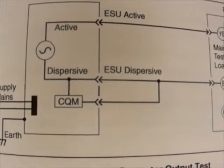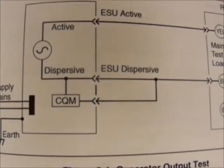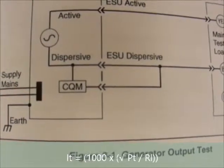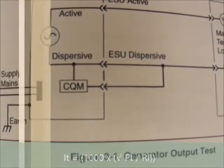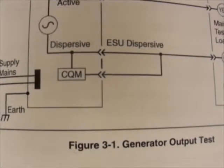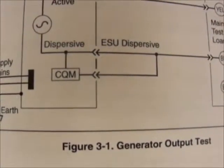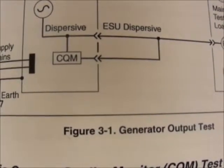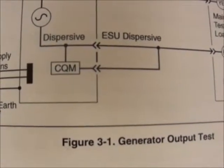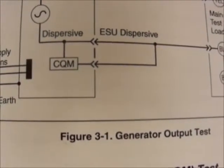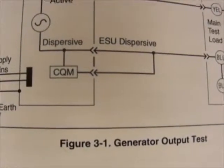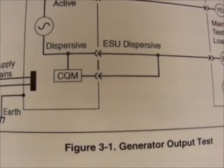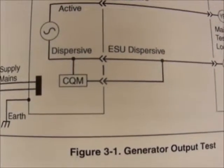We can compute target currents if our analyzer does not measure up to 1,000 ohm loads. For example, ITMA equals 1,000 times the square root of PT divided by RL. Imagine our analyzer's maximum test load is 750 ohms. To calculate our new mA ratings, we replace the total power PT with the setting of 28 watts divided by 750 ohms, which is the RL or resistance load, then take the square root of that, and finally multiply by 1,000, equaling 193 mA.